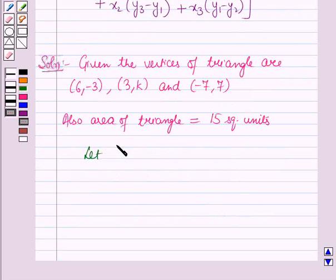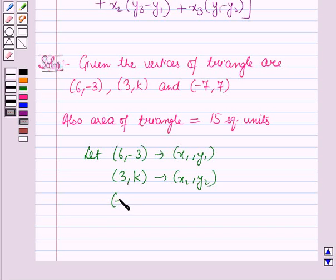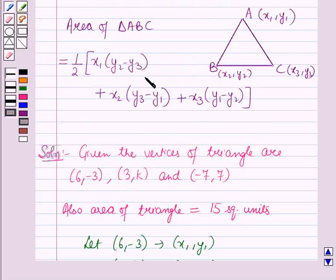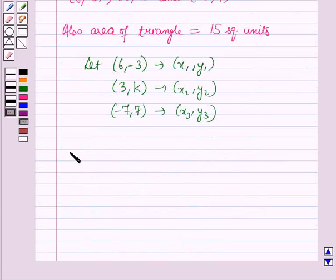Now let (6, -3) as (x₁,y₁), (3, k) as (x₂,y₂), and (-7, 7) as (x₃,y₃). Now using this formula which is given in the key idea, area of the triangle will be equal to...